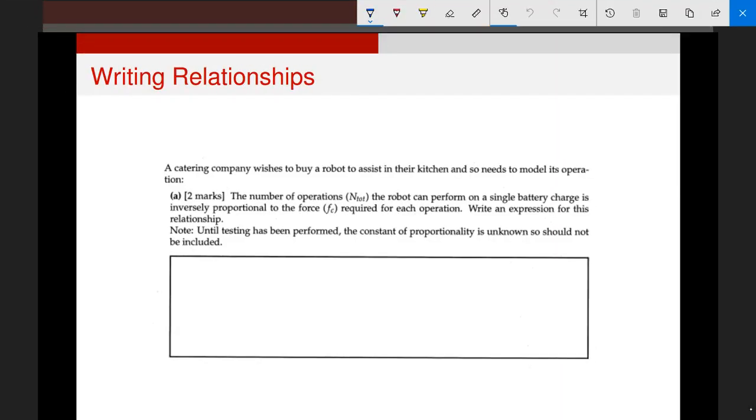The number of operations the robot can perform on a single battery charge is inversely proportional to the force required for each operation. Write an expression for this relationship. So what that means is that N_tot is inversely proportional, so proportional to 1 over F_c. That's all that means.